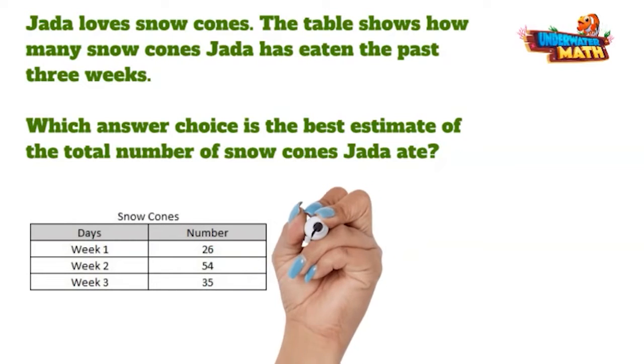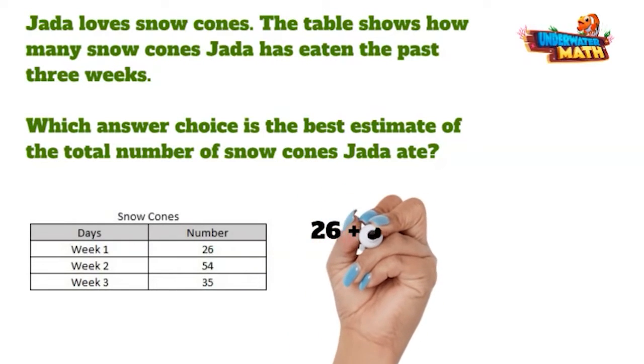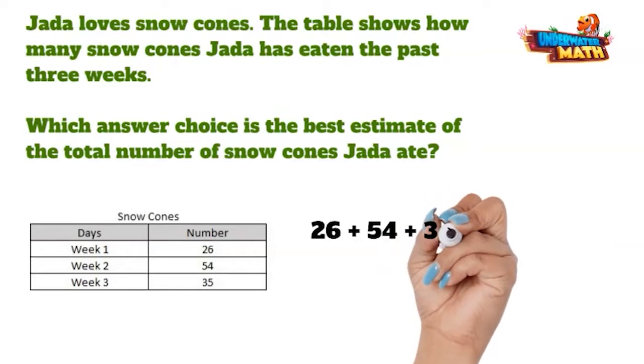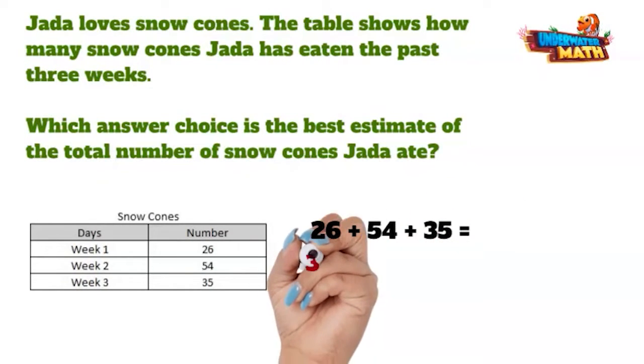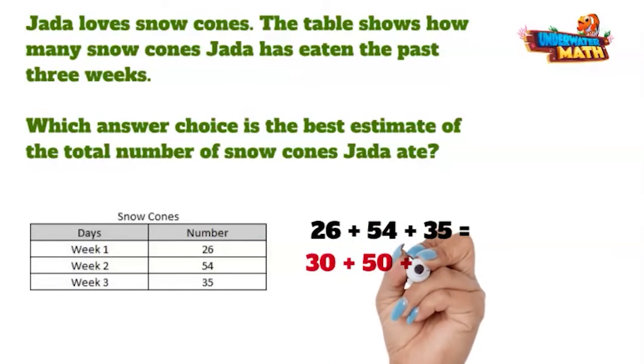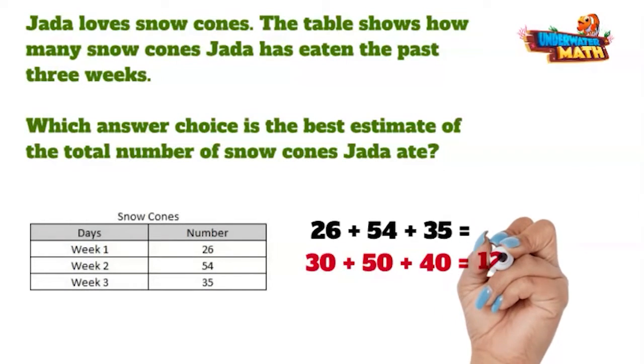To find the total number of snow cones you have 26 plus 54 plus 35. Now let's round the numbers so we can use mental math. 26 rounds up to 30, 54 rounds down to 50, and 35 rounds up to 40. What is 30 plus 50 plus 40? 120.